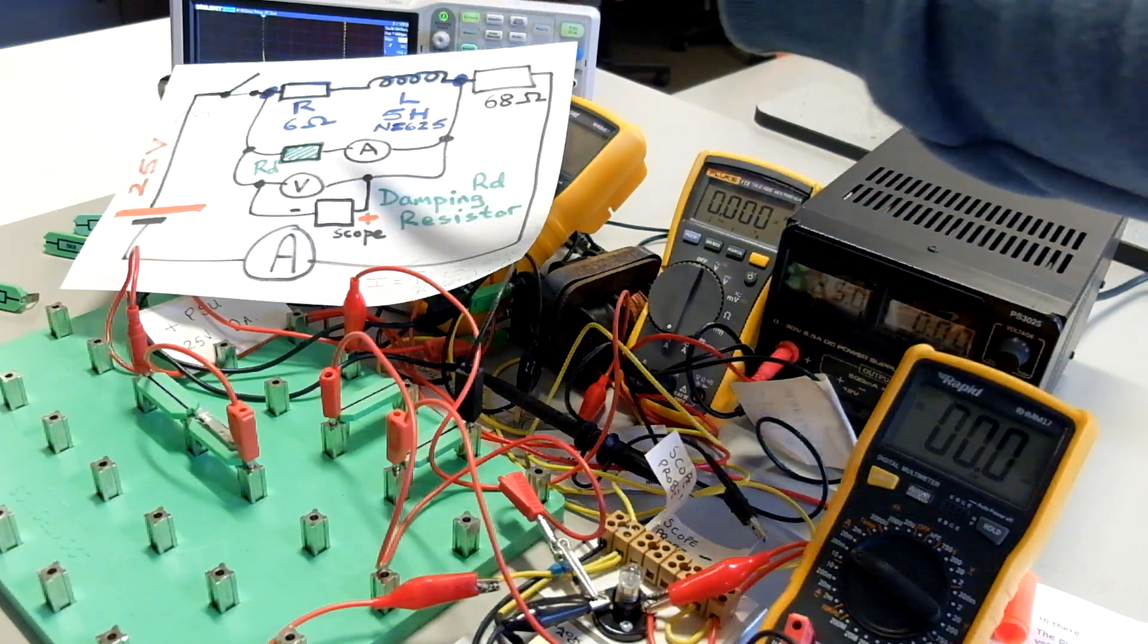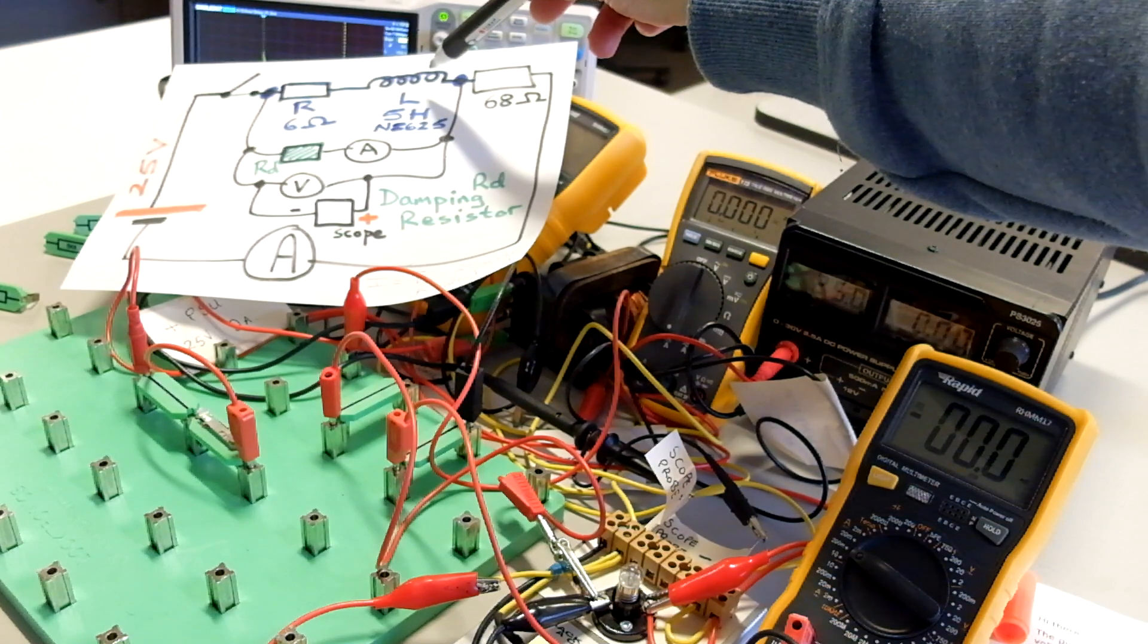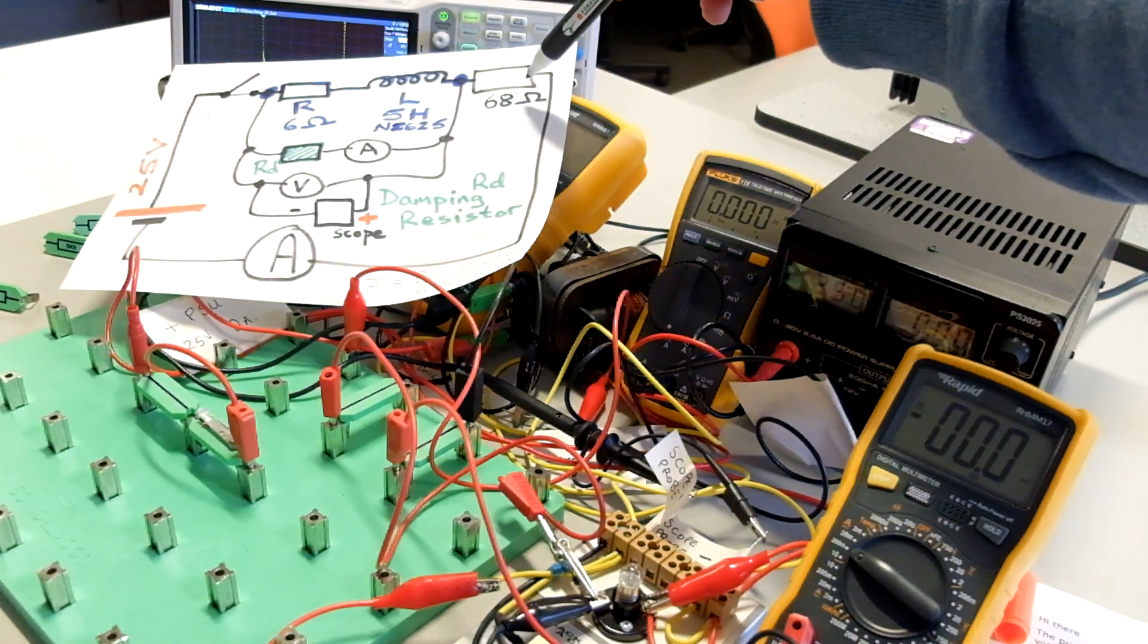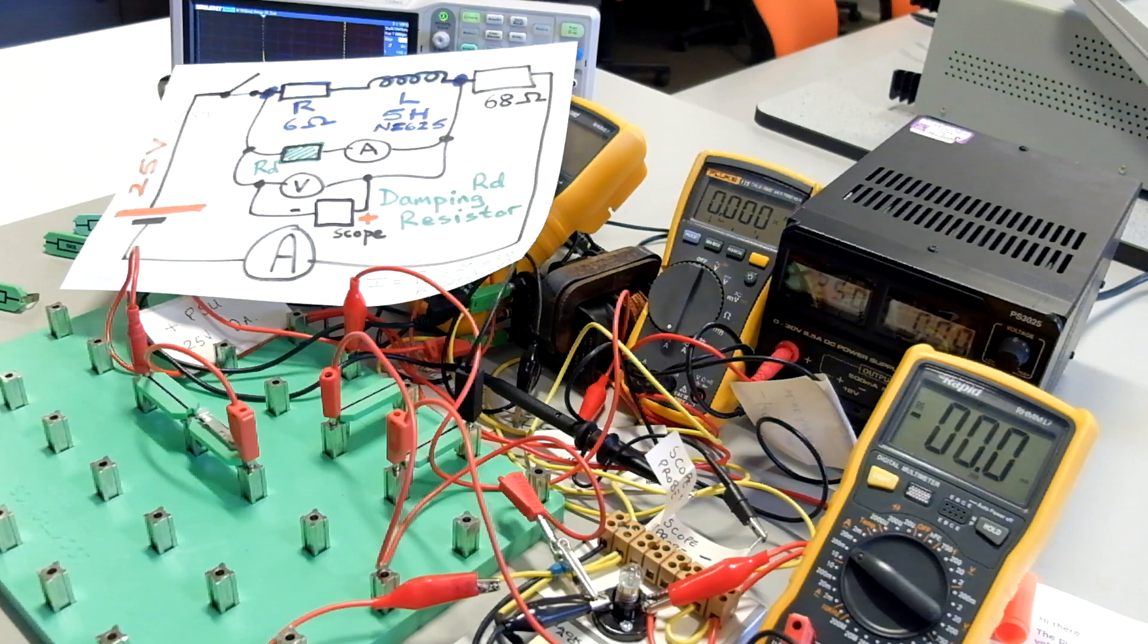So we've got six ohms internal to the coil plus external 68 which gives 74. Ohm's law: 25 volts divided by 74 ohms gives us a current of 338 milliamps is what we predict.